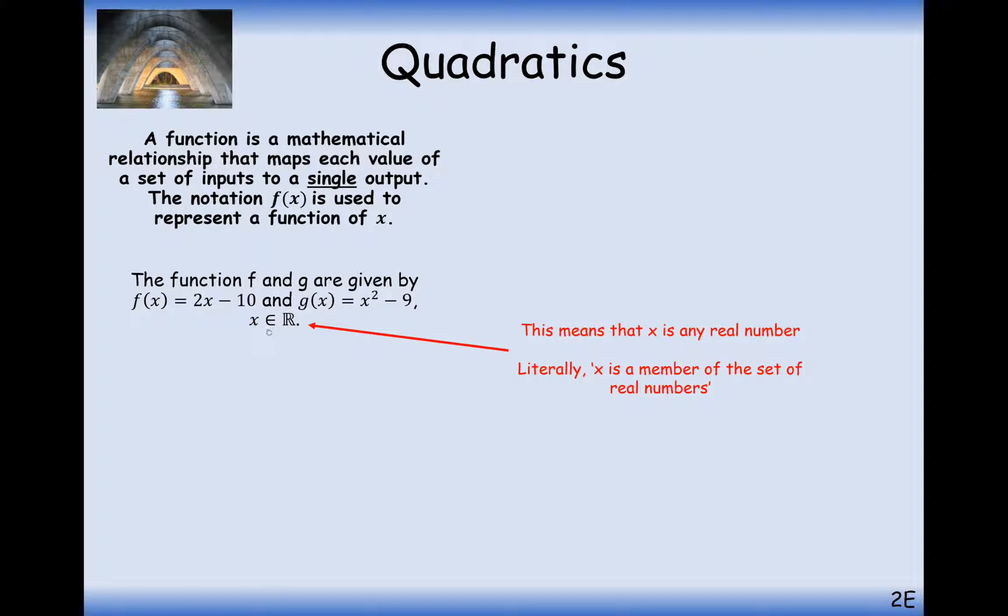This literally means x exists in, this e, think of this as exists in, and this r here is the set of real numbers. Sometimes you may see an n, which means it's a natural number, or a z, which means it's a whole number, and z can include negative numbers as well, or all of the negative numbers.